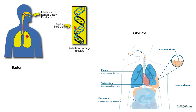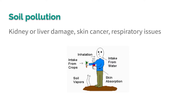Asbestos causes mesothelioma. Soil pollution can come from ingesting food that's got pesticides on it, or it can come from inhalation of vapors coming from the soil. It can include mostly pesticides, but any sort of toxins that get into the soil can cause kidney or liver damage, skin cancer. If you are exposed to it physically a lot, it can cause respiratory issues.